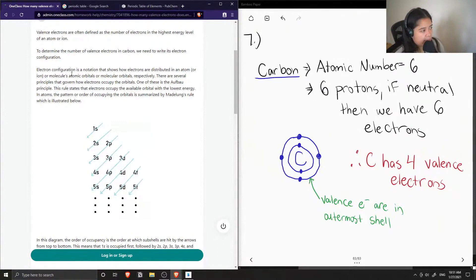Electron configuration is a notation that shows how electrons are distributed in an atom or ion, or molecules, atomic orbitals, or molecular orbitals, respectively. There are several principles that govern how electrons occupy the orbitals.